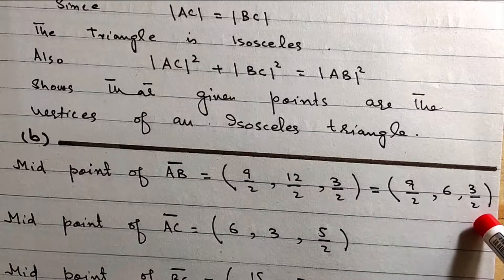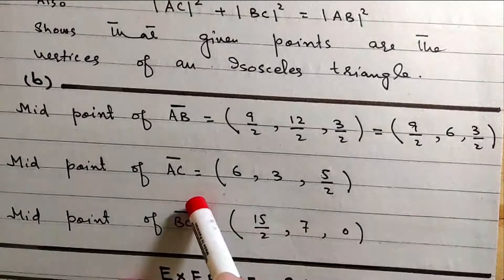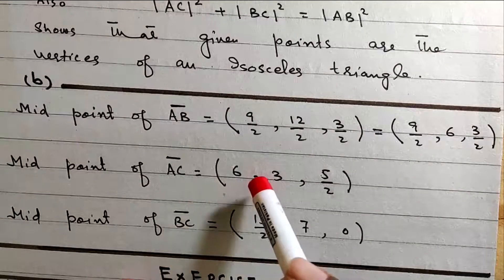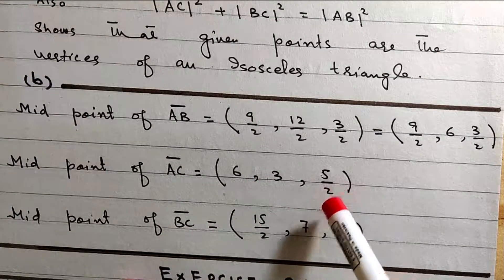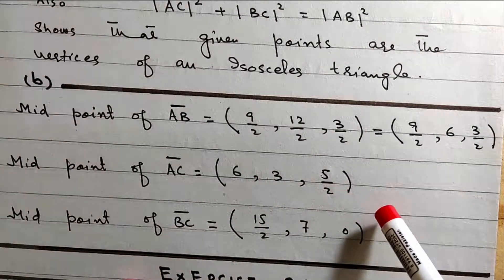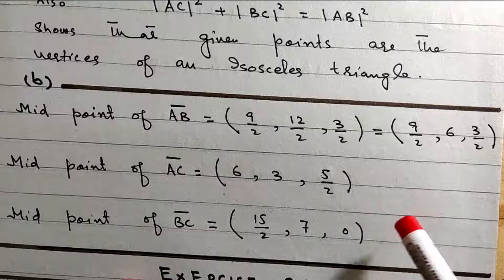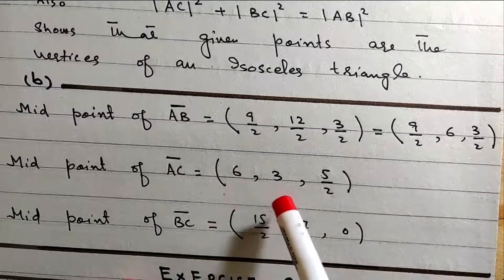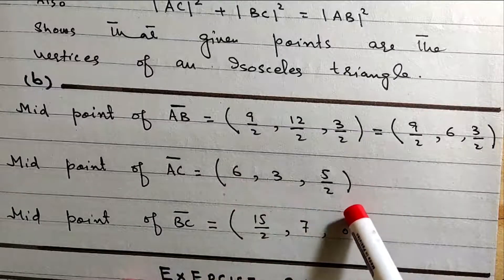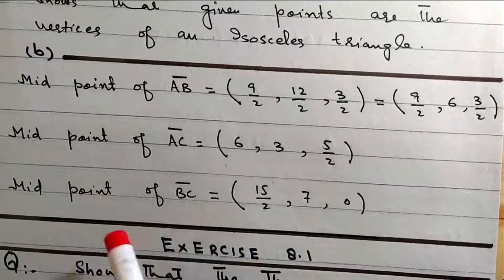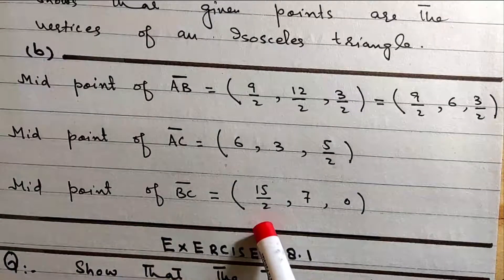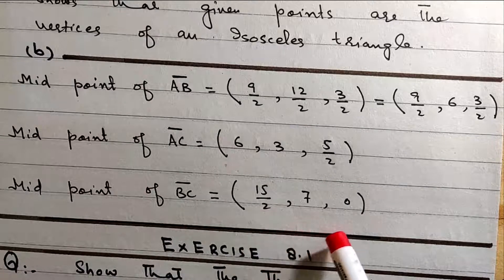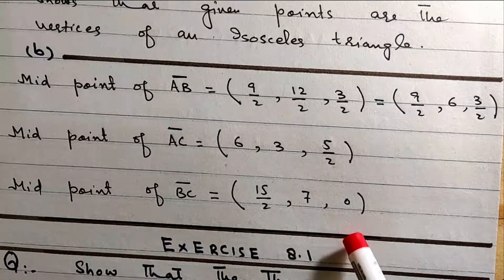We get 9/2, 6, and 3/2. Midpoint of AC: x1 plus x2 divided by 2, y1 plus y2 divided by 2, z1 plus z2 divided by 2, giving 5, 6, 3 and 5/2. Midpoint of BC: 15/2, 7, and 0.